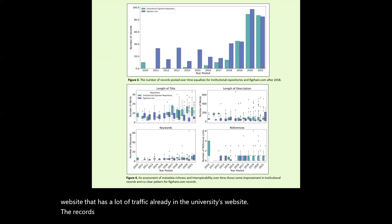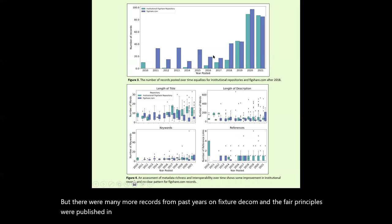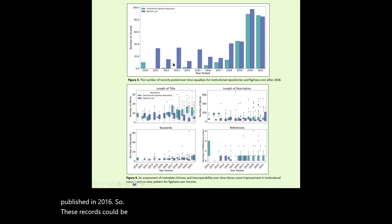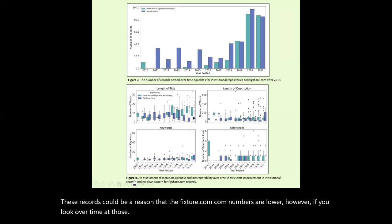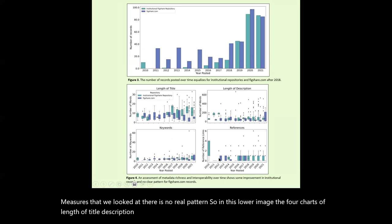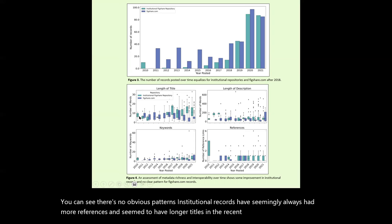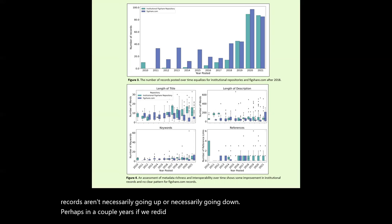Records were mainly published in the last three years for both figshare.com and institutional repository records, but there were many more records from past years on figshare.com. The FAIR principles were published in 2016, so those older records could be a reason the figshare.com numbers are lower. However, if you look over time at those measures — title and description length, keywords, and references — there is no real pattern. Institutional records have seemingly always had more references and longer titles in recent years, but the figshare.com records aren't necessarily going up or down. Perhaps in a couple of years, if we redo this analysis, we'd see hopefully an upward trajectory for both.